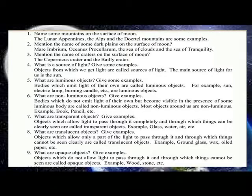What are opaque objects? Give examples. Objects which do not allow light to pass through it and through which things cannot be seen are called opaque objects. Example: wood, stone, etc.